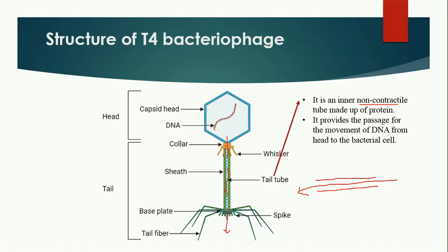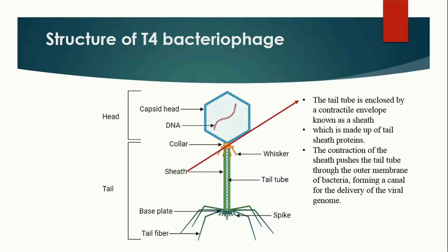The tail tube is enclosed by a contractile envelope known as the sheath. The sheath is made up of sheath proteins and can contract and relax. The purpose of the sheath is that its contraction pushes the tail tube through the outer membrane of the bacteria, helping to form a canal for the delivery of the viral genome — just like a syringe applying pressure to move liquid.